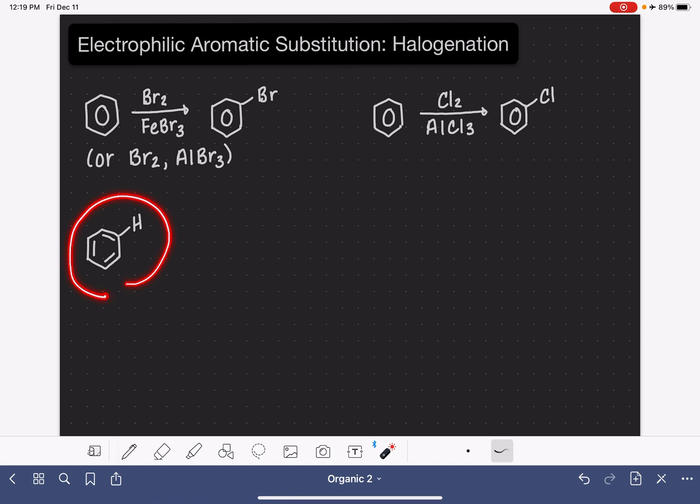I'm going to draw the mechanism down here. I'm showing only one of the hydrogen atoms on the benzene ring. As you know, there are a total of six, but for this mechanism, we only need to draw one of them.